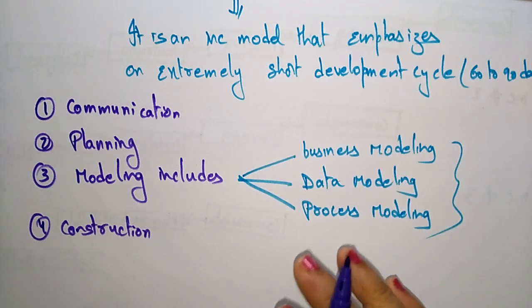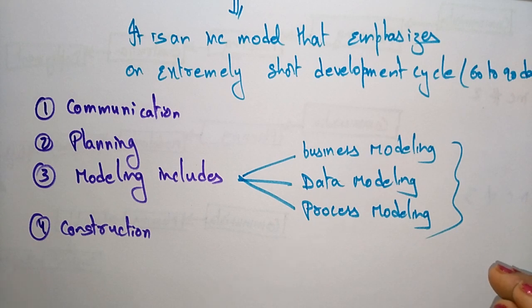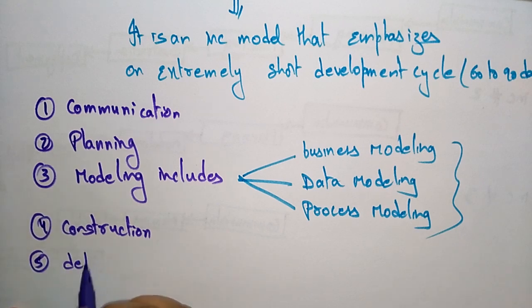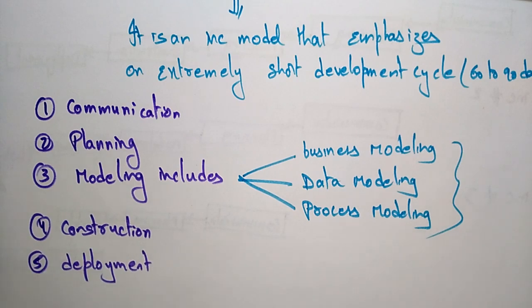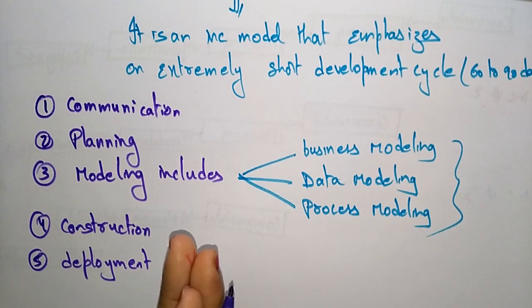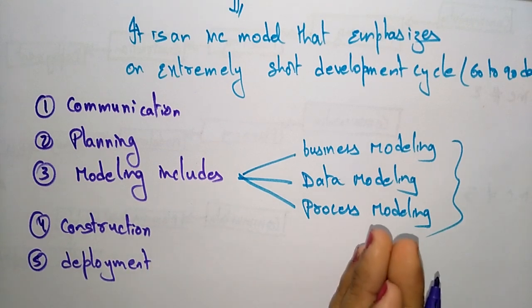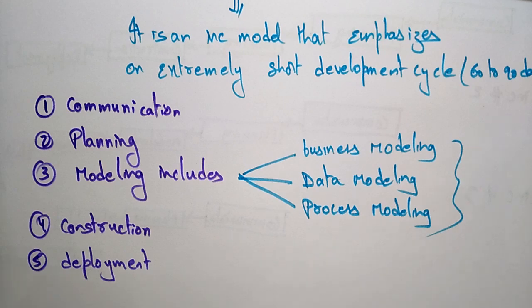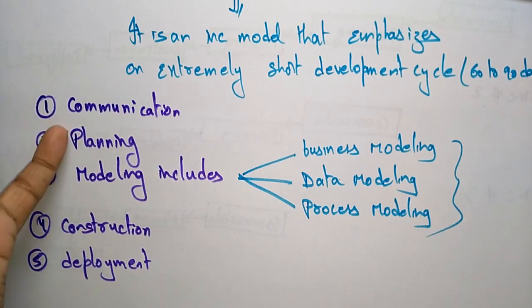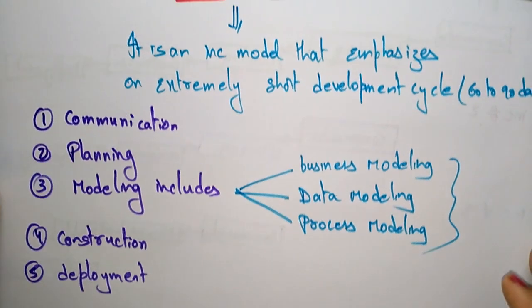The next stage is Construction, where they write the code. The RAD model uses fourth generation techniques to write the construction code. The final stage is Deployment. Whatever model you are taking, every phase follows these steps: first communicate, then plan, then model, then construction, and deployment. The names may vary — for example, construction can also be written as implementation — but the activity flow remains the same.